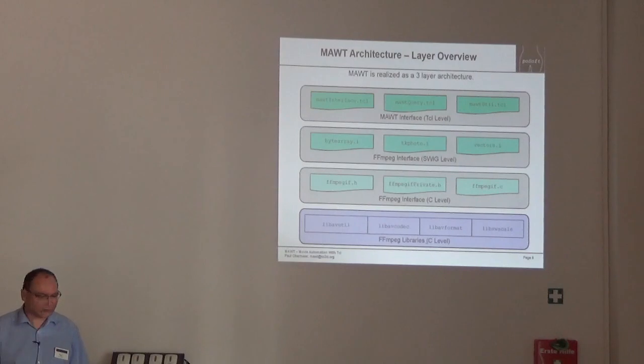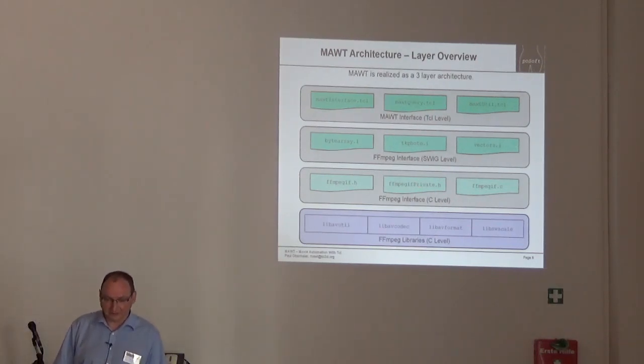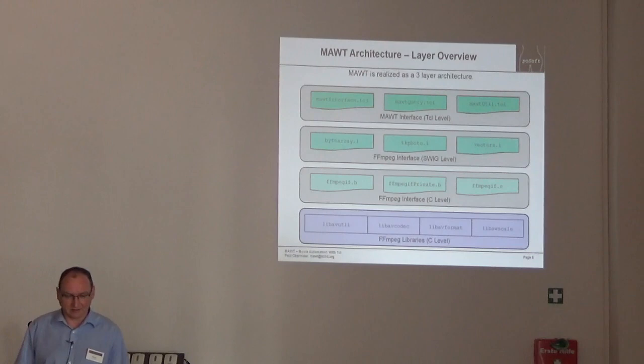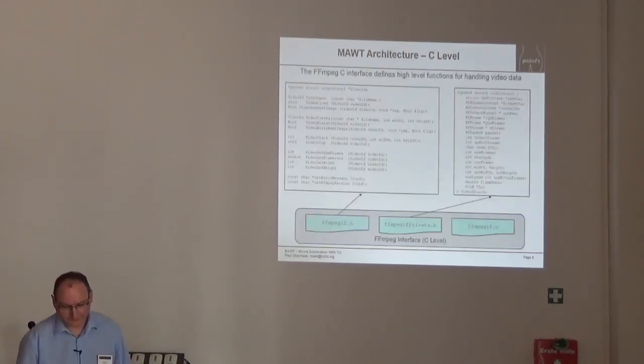How did I try to get the FFmpeg functionality to Tcl? You have the FFmpeg libraries and then you have a three-layer architecture. The first layer has a C-level interface which provides higher level functionality to have access to the FFmpeg functionality. Then there is a SWIG level, that means the C-level functions are wrapped with SWIG to be accessible in Tcl. And there's also some utility functions to deal with photo images and stuff like this. And the real interface the user can use is then a Tcl OO interface which has access to the functions below that.